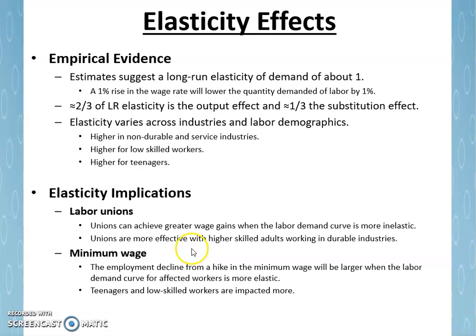Unions are also more effective with higher-skilled adults working in durable industries. The durable industries fits in with the automobile example, but that would also apply to other goods-producing industries — manufacturing in general. As far as higher-skilled adults, these are workers that are less easily substituted with equipment or technology, so, again, a more inelastic labor demand.